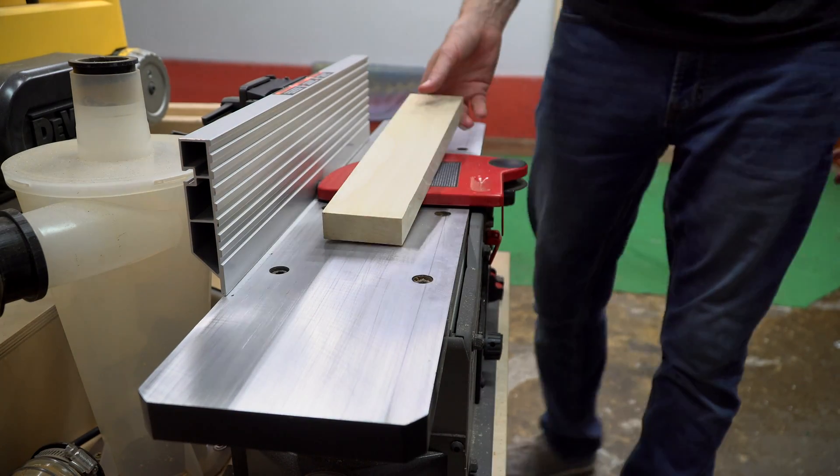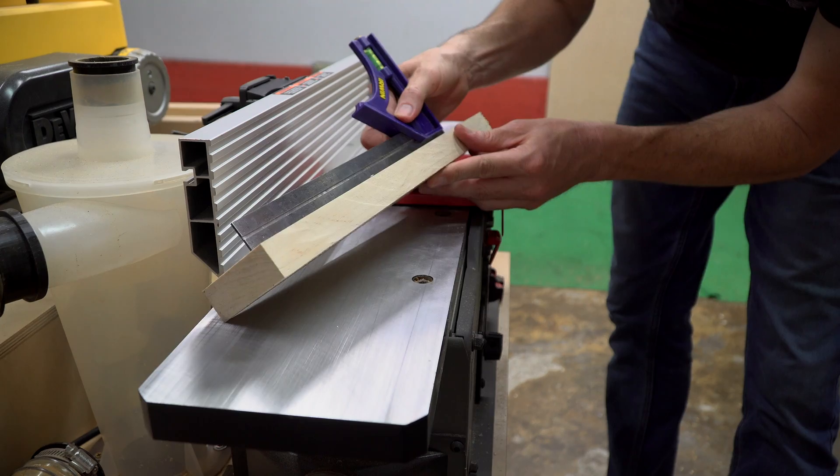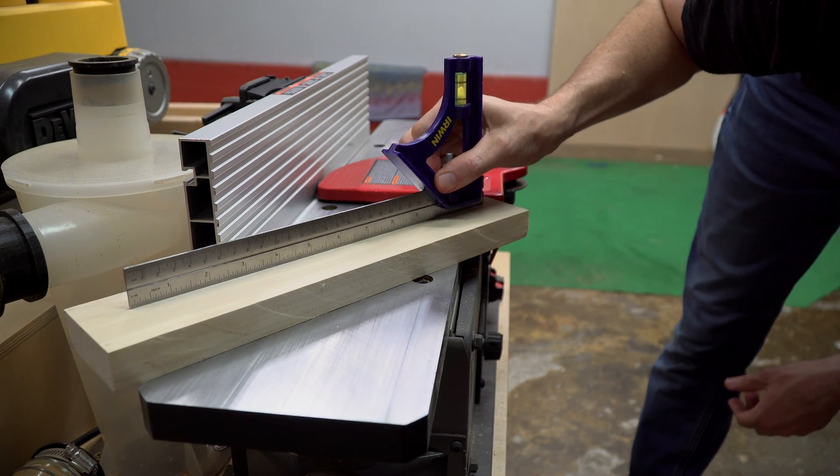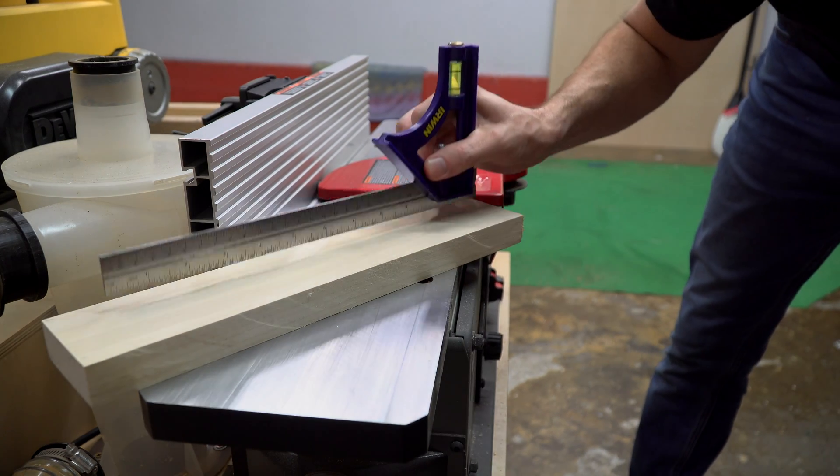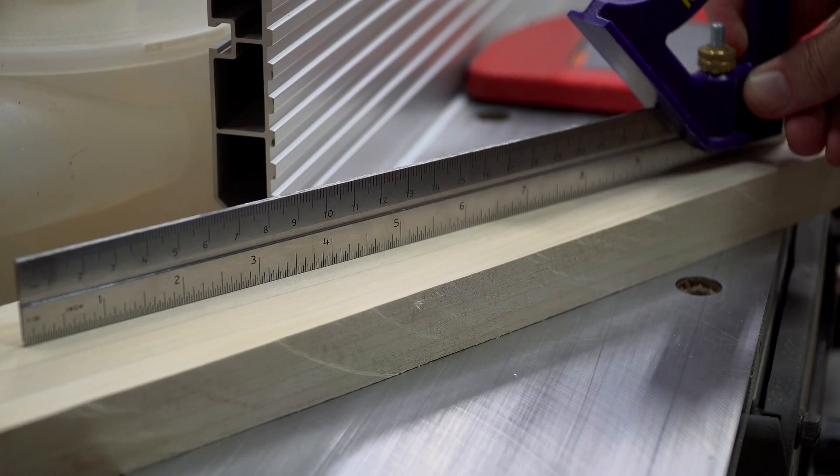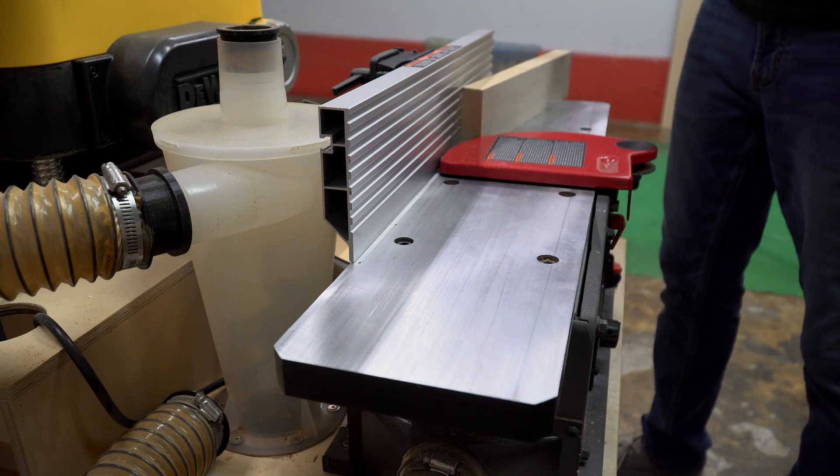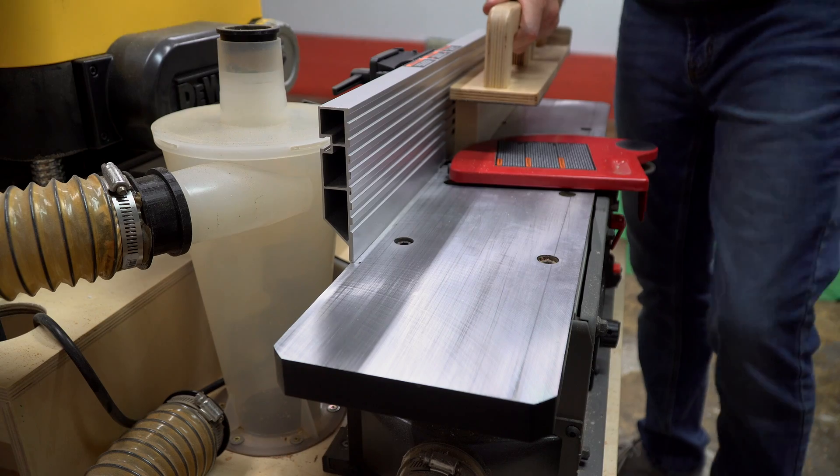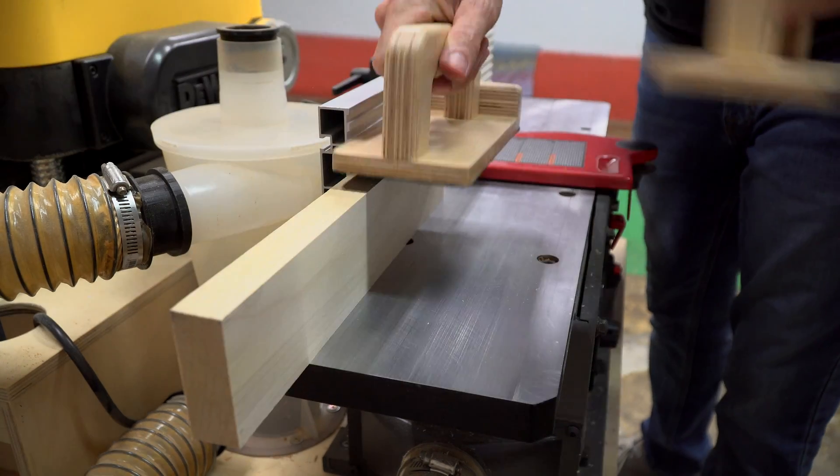As you can see here, after adjusting this blade, the jointer is indeed making nice flat cuts. If you aren't getting a good result, your blade is likely too high or too low. Just repeat the steps and really focus on making sure you're getting the blade set at just the right height.